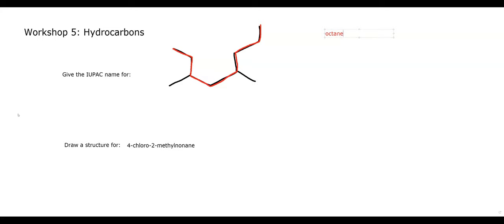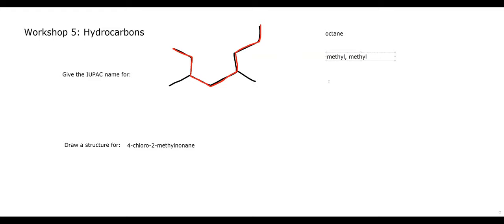Let's go ahead and number with our substituents. First, let's find out what substituents we do have. We have a methyl group here and a methyl group here, so we have two methyl groups. Those are the substituents we have on the octane chain.